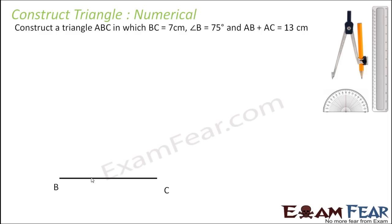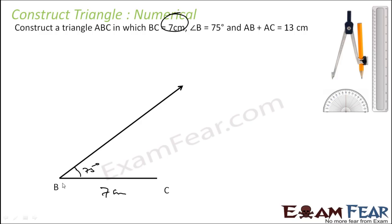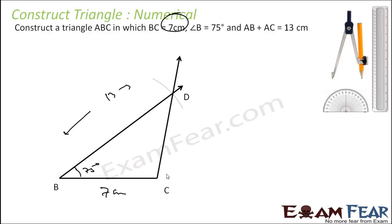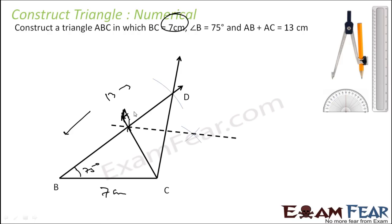Let's take another example where base BC equals 7 centimeters, angle B equals 75 degrees, and AB plus AC equals 13 centimeters. We draw BC of 7 centimeters, then draw angle B of 75 degrees using a compass. Since AB plus AC equals 13 centimeters and we don't know where A is, we take 13 centimeters with B as center and cut an arc to get point D. We join DC and draw the perpendicular bisector of DC. The point where it intersects gives us point A, and thus ABC is the required triangle.